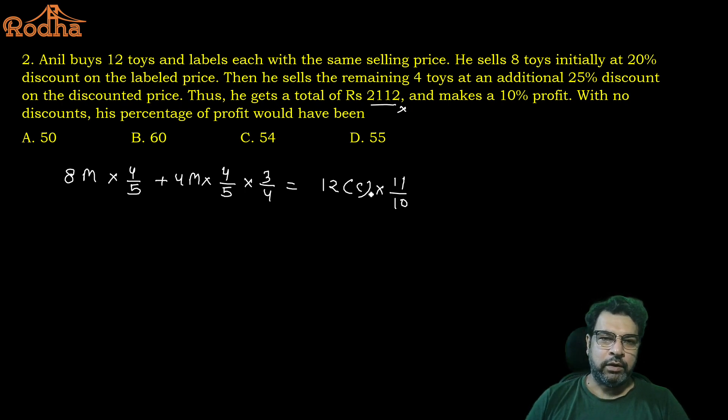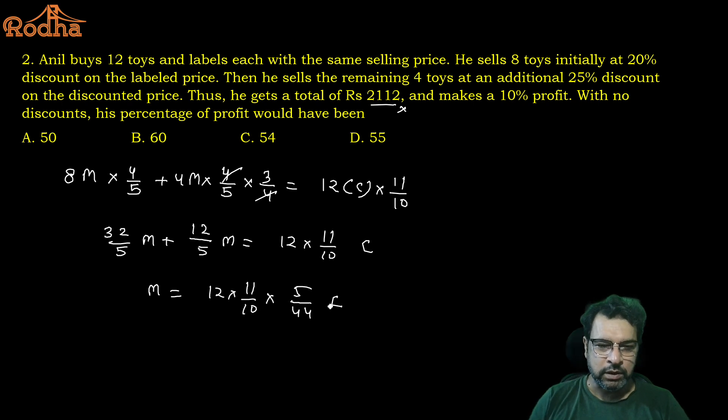So this is one price, according to cost price, for 12 items, cost price would have been 12C. On that I am having a profit of 10%, so it is 10% profit, which means 11 by 10. This is also selling price, this is also selling price, should be equal. So one point comes, this is not required. Now can we solve it, yes. This is 32 by 5 M plus 12 by 5 M is equal to 12 into 11 by 10 into C.